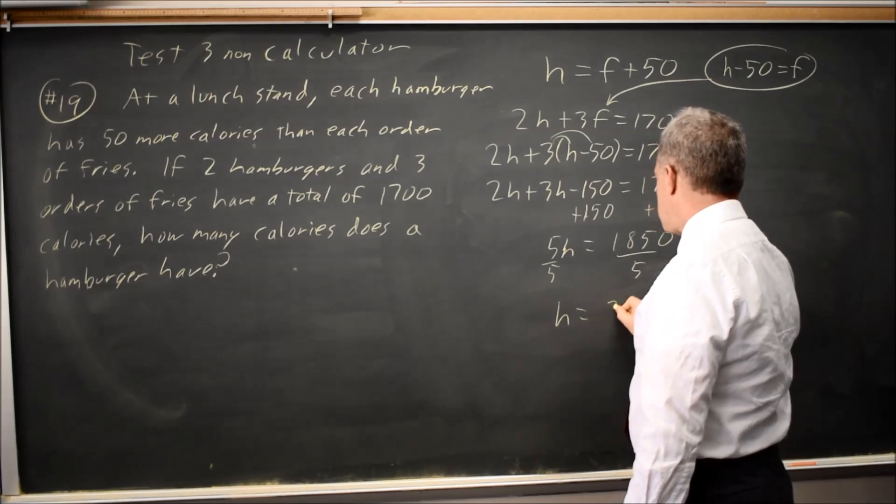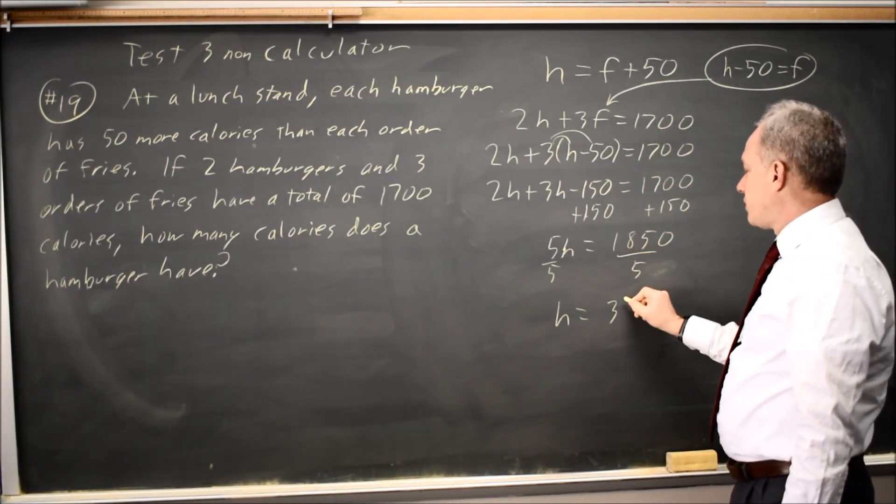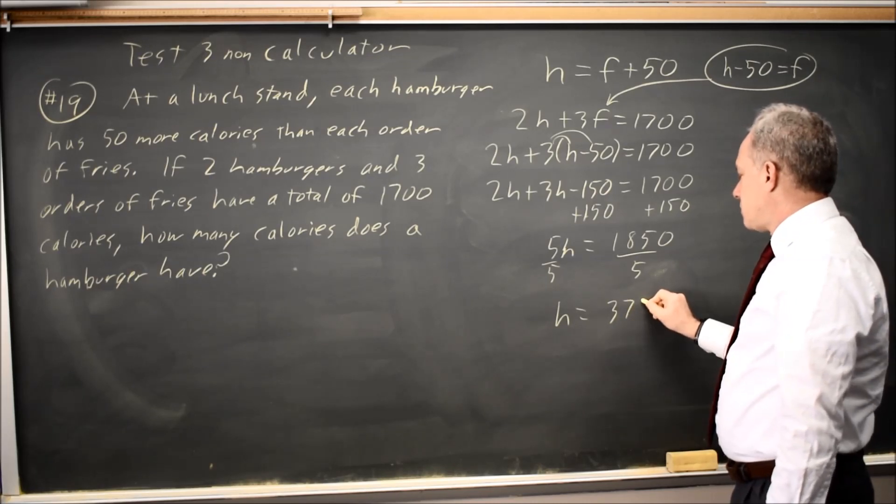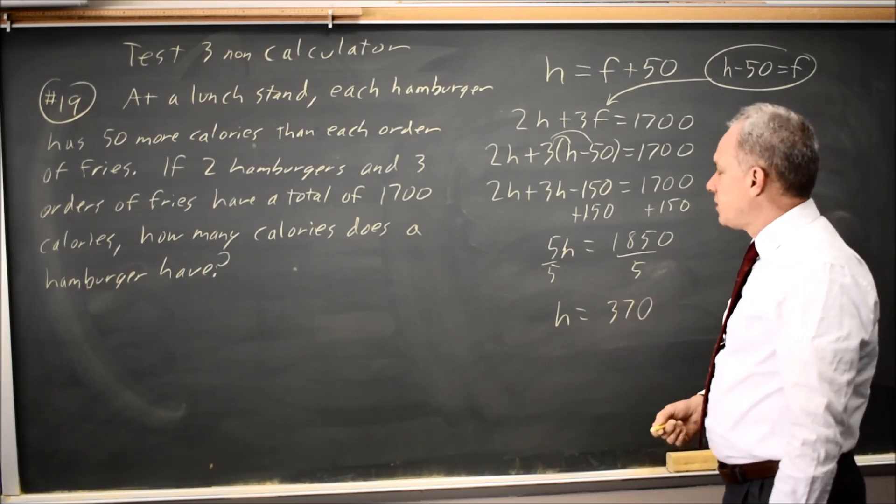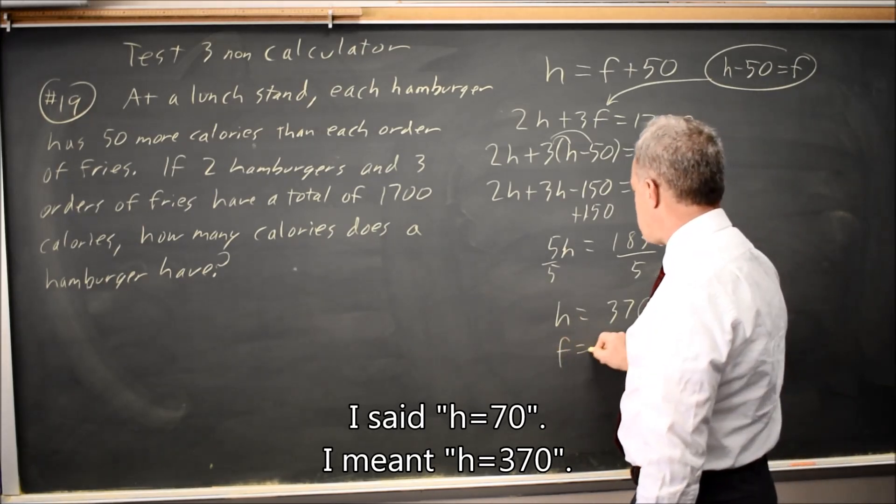H equals, 3 times 5 is 1,500, leaving 350. 70 times 5 is 350. H equals 370, and F is 50 less, so F is 320.